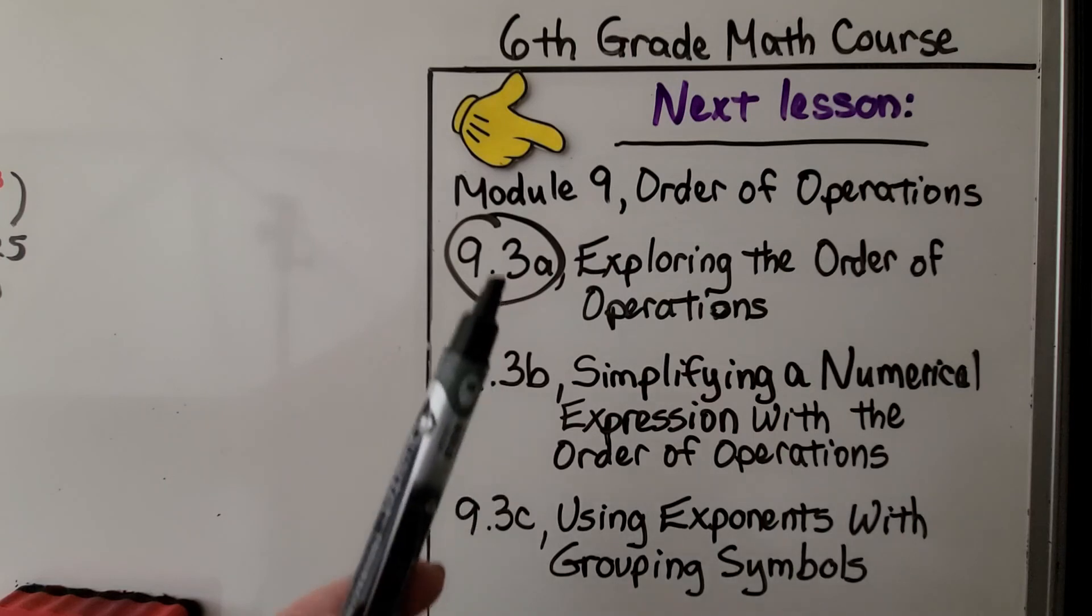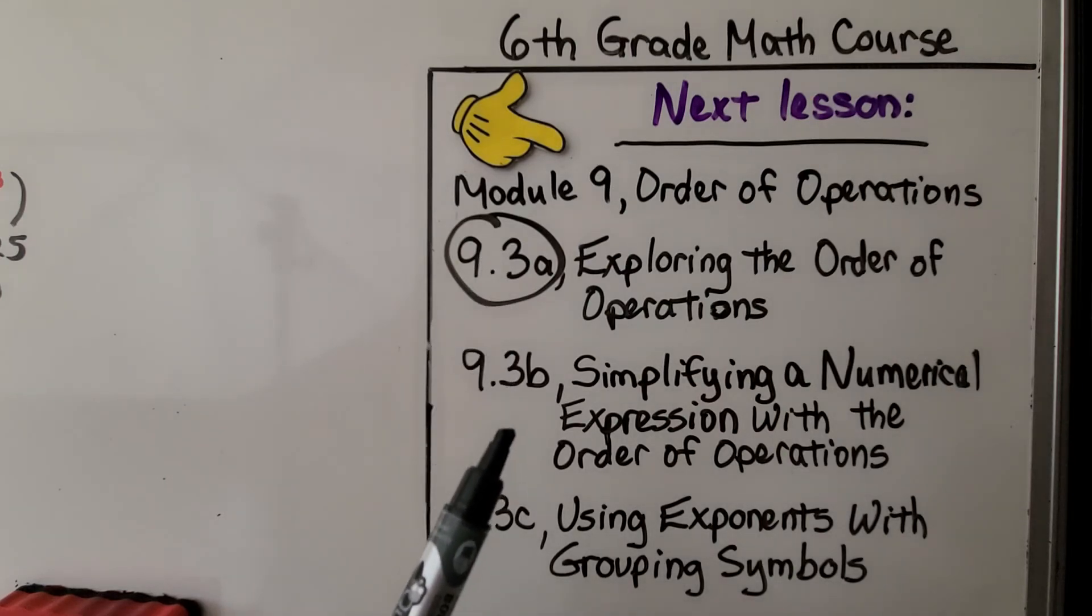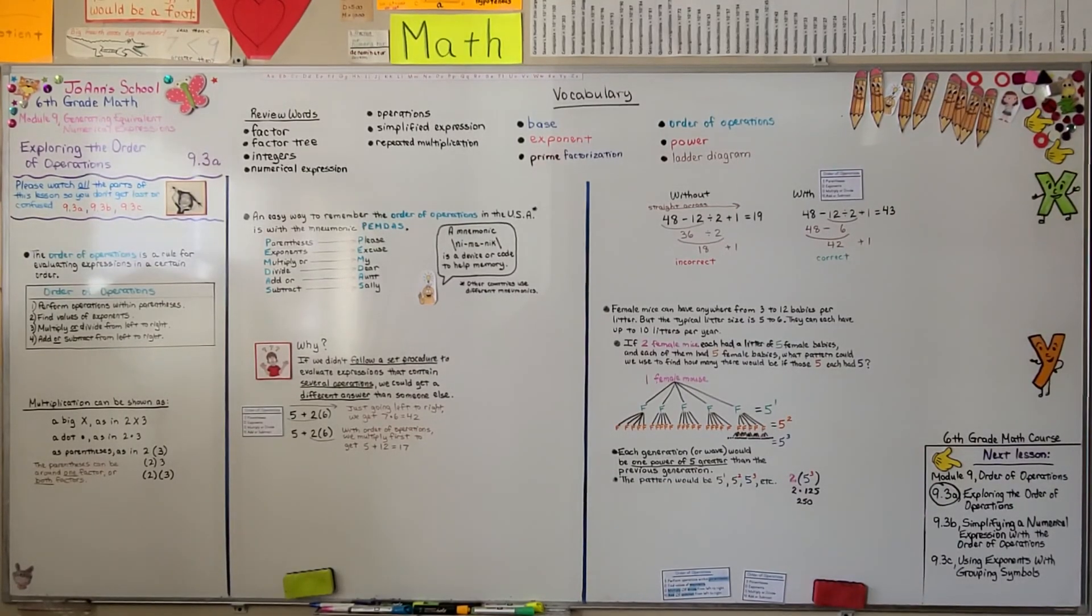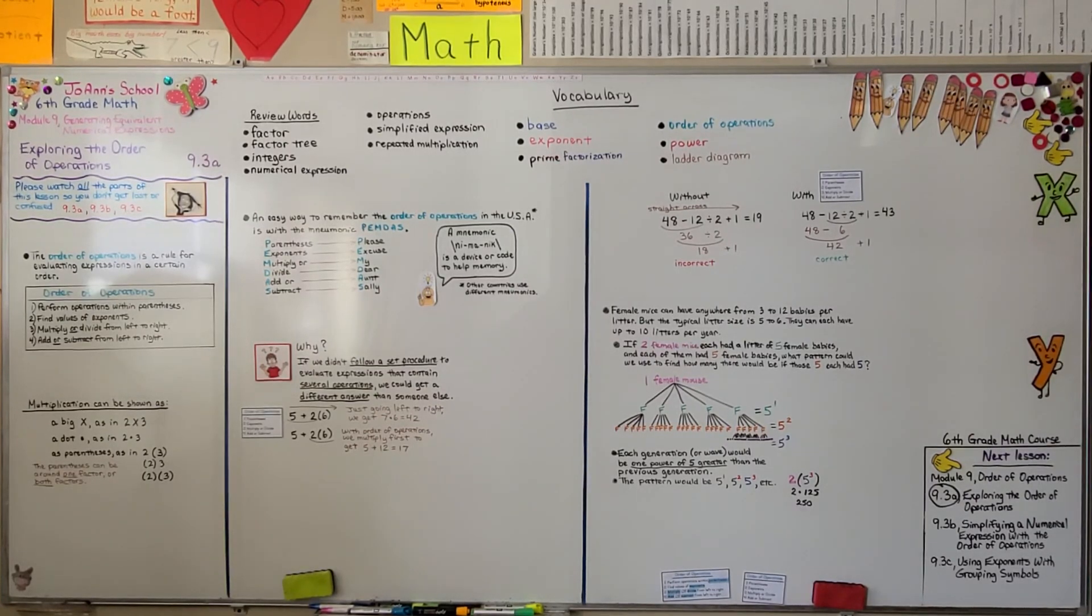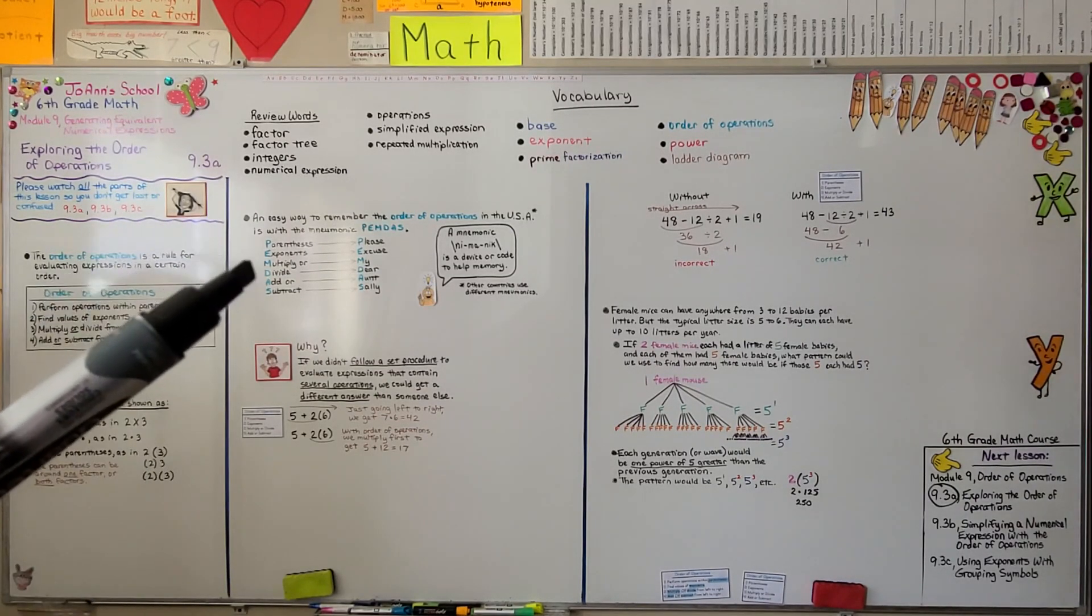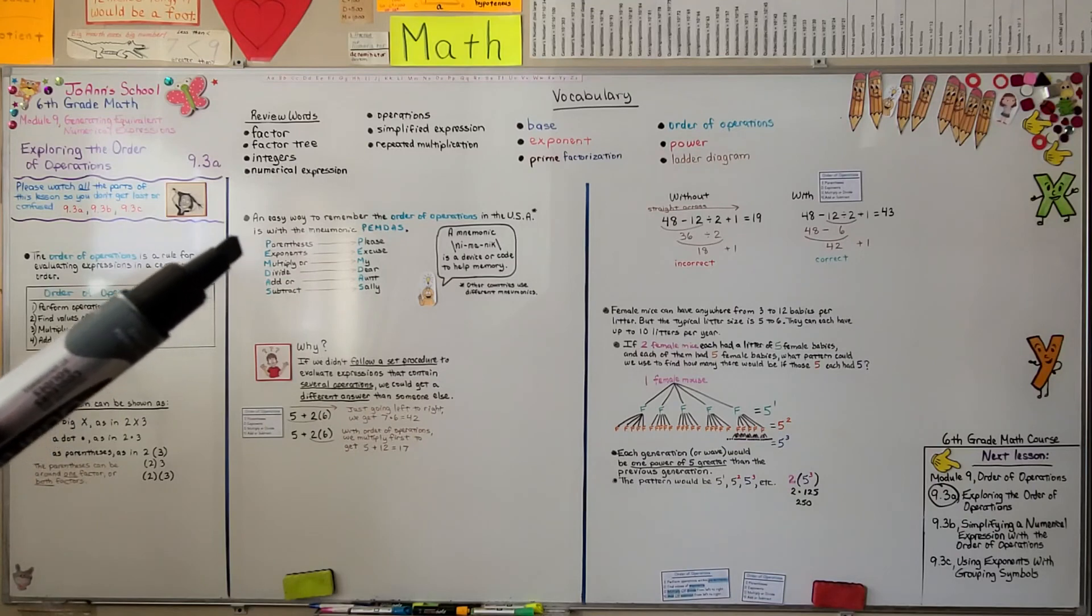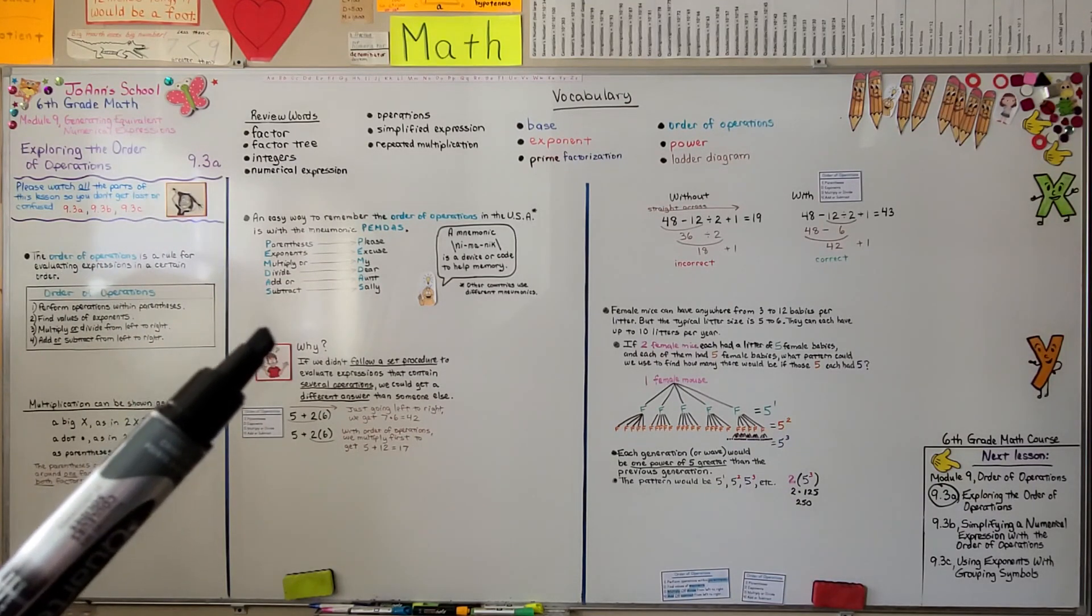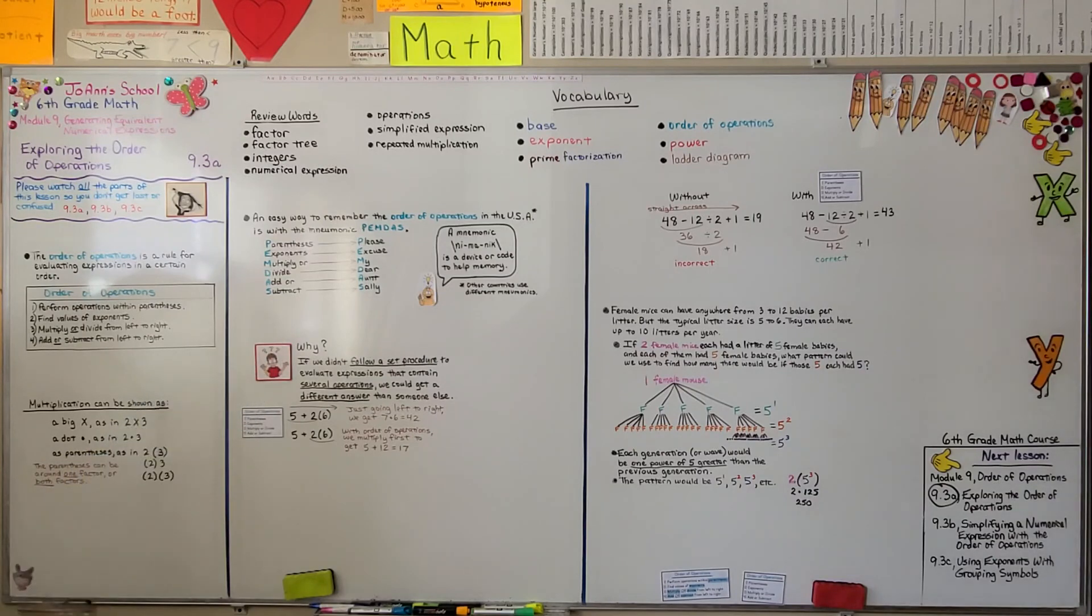So we finished the first part of the lesson. We're going to move on to the second part, simplifying a numerical expression with the order of operations. We're going to talk more about parentheses in the last part. So either you can use Please Excuse My Dear Aunt Sally to help you remember the order of operations. Just remember, it isn't multiply then divide, it's multiply or divide left to right, whichever comes first. And then add or subtract from left to right, whichever comes first.